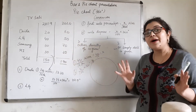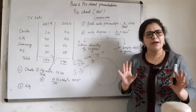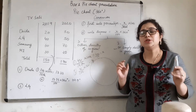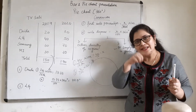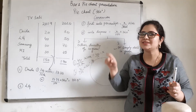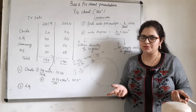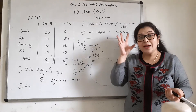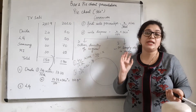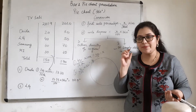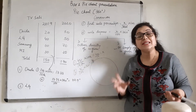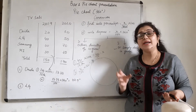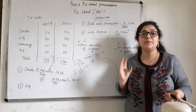Now, why do you need degrees for a pie chart? Because a pie chart is a circle, and in a circle there is a 360-degree angle. So if you have to plot data in a circle, you need degrees. That is why we convert each data value into degrees.